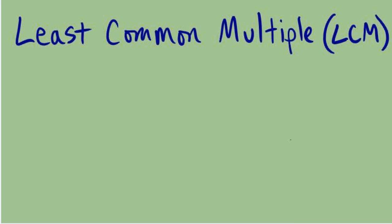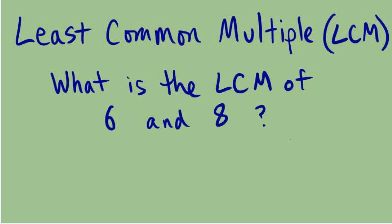In this video we're looking at how to find the least common multiple, or the LCM. It's important to know that the least common multiple is something we can find among two or more numbers — you really can't find an LCM of just one number. An example might be: what is the LCM of 6 and 8?